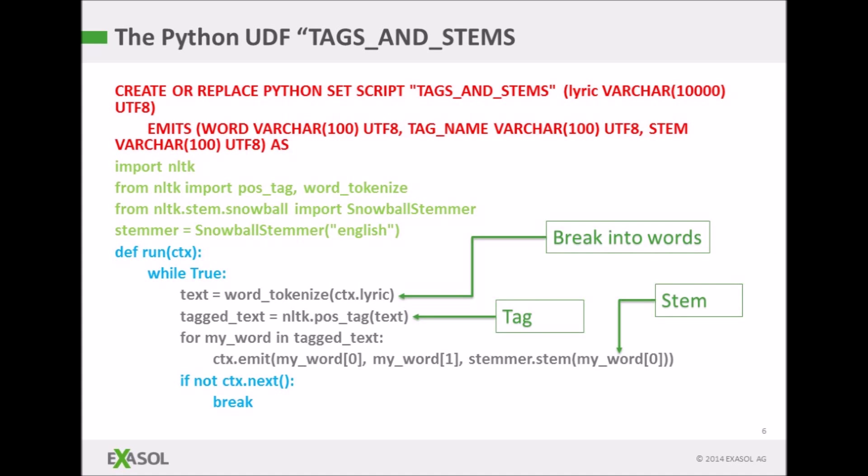Here is my user-defined function, which is the basis of this kind of analysis. The bit in red at the top is just a header, just to say that it's going to take in a VARCHAR(10000) called 'lyric', which is a piece of lyrics, and it's going to emit a word, a tag name, and a stem.